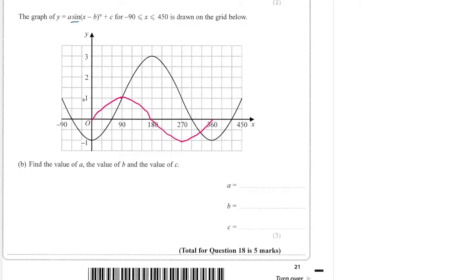And again, that has a gap of 2. And the gap between the high point of 3 and the low point of minus 1 is a gap of 4. So therefore, the gap has been doubled. So the graph has been stretched by a scale factor of 2. So a is 2.